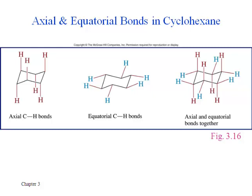So that ends up giving you three axial up hydrogens, three axial down hydrogens on alternating carbons, and the equatorial bonds alternate in the same way. A carbon that has an equatorial up position is neighbored by carbons that have equatorial down.